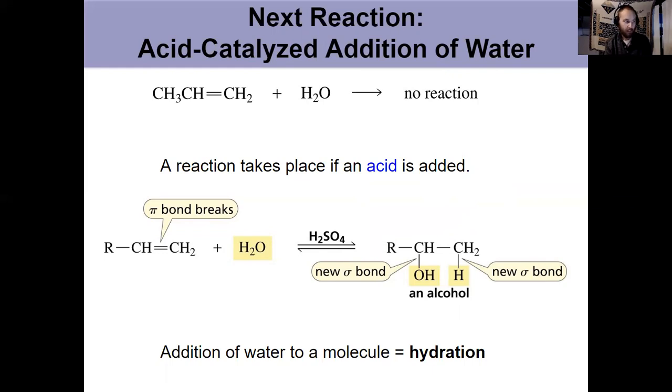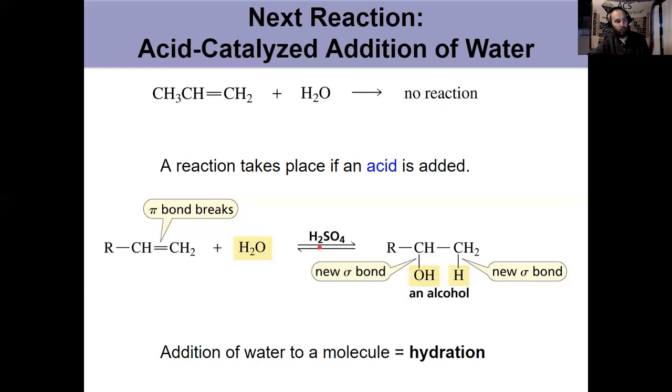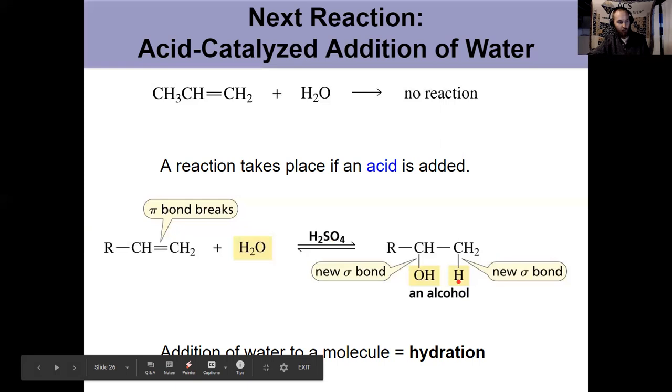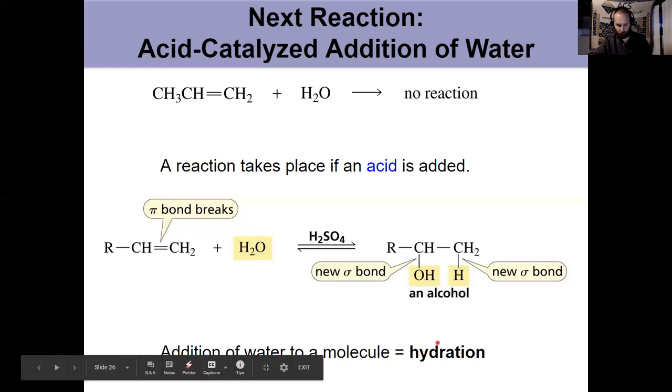But if I add an acid catalyst, that provides me the electrophile. That allows the reaction to happen. So you have to have both. You have to have the alkene. You have to have water. You have to have an acid catalyst. We use sulfuric acid. That allows the reaction to happen. And the net product is an alcohol. We add H on one carbon. OH to the other. So HOH. We've now added water. The addition of water. It's also called a hydration reaction.